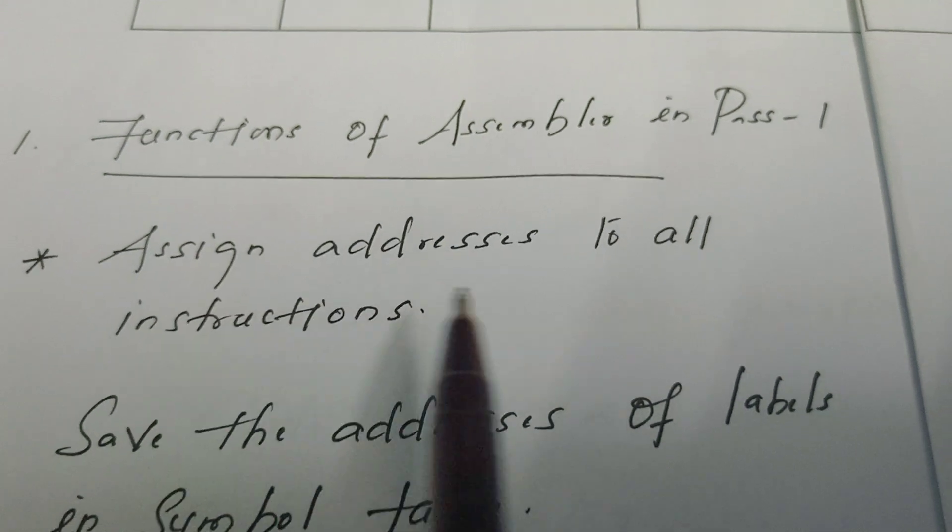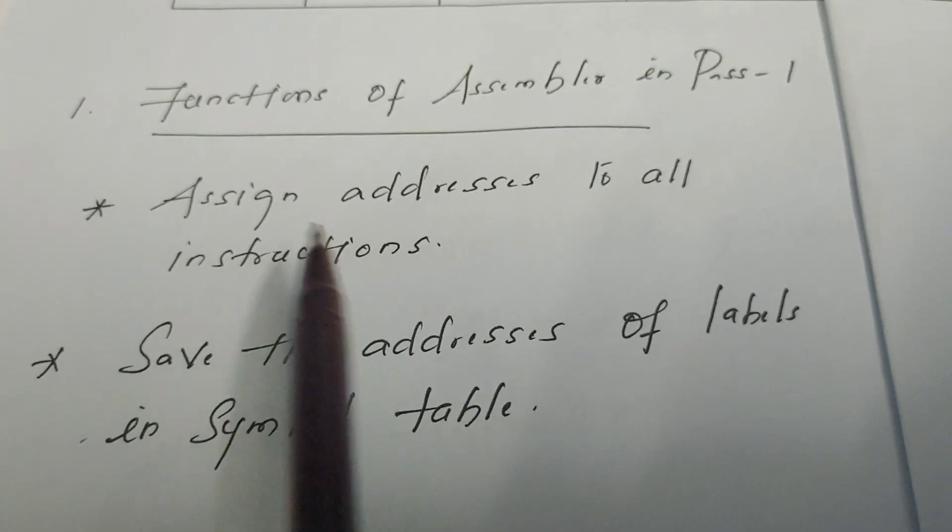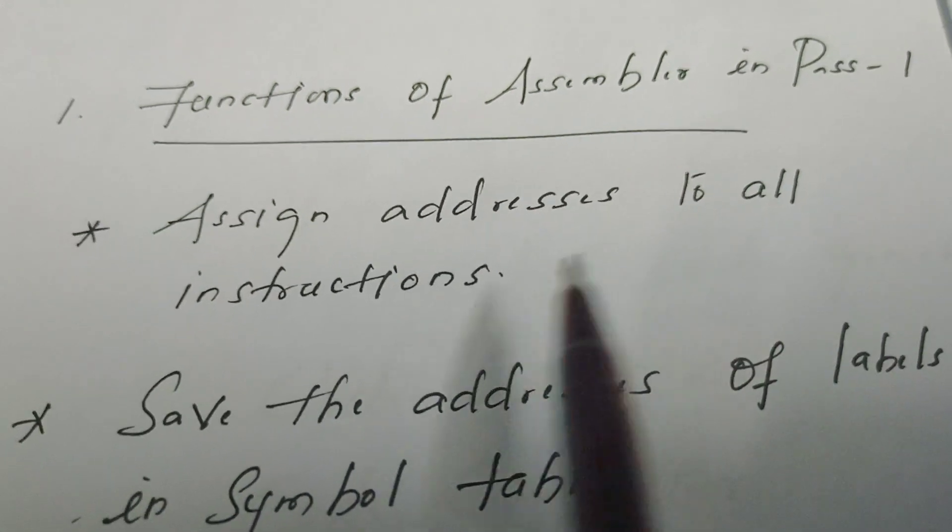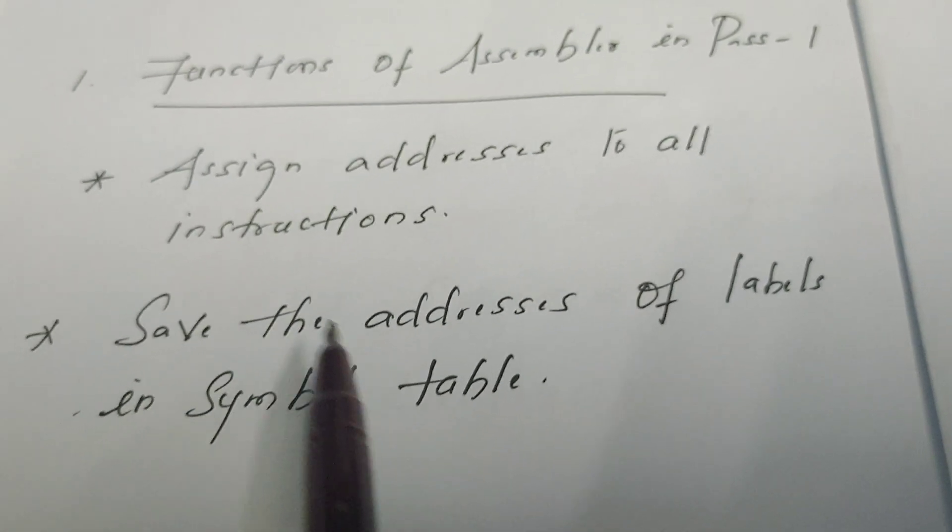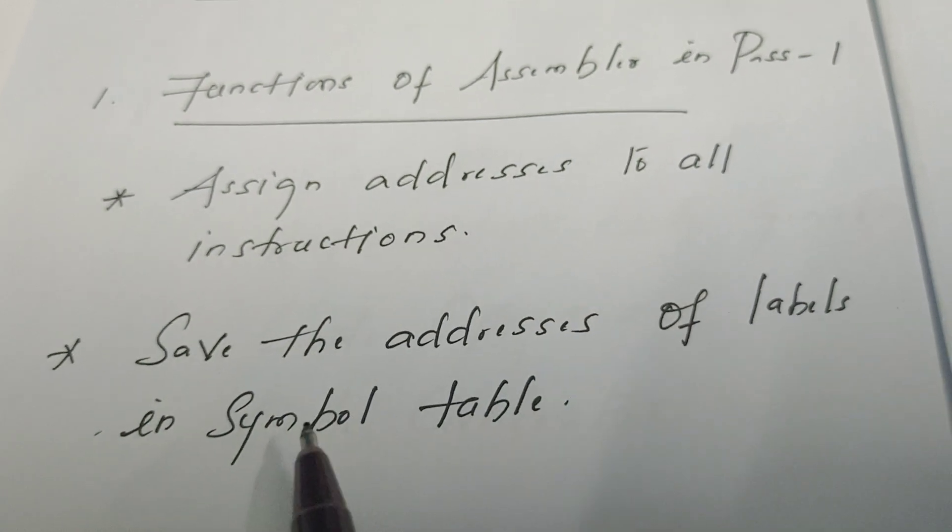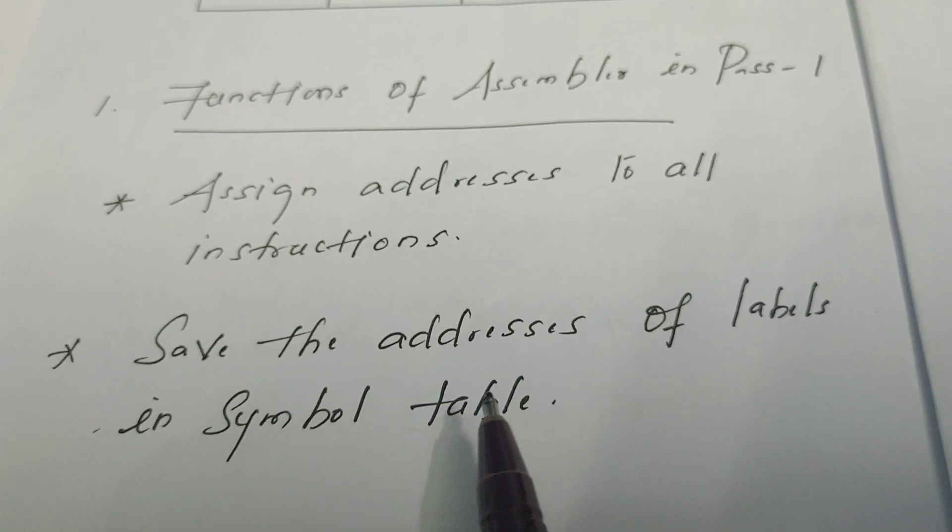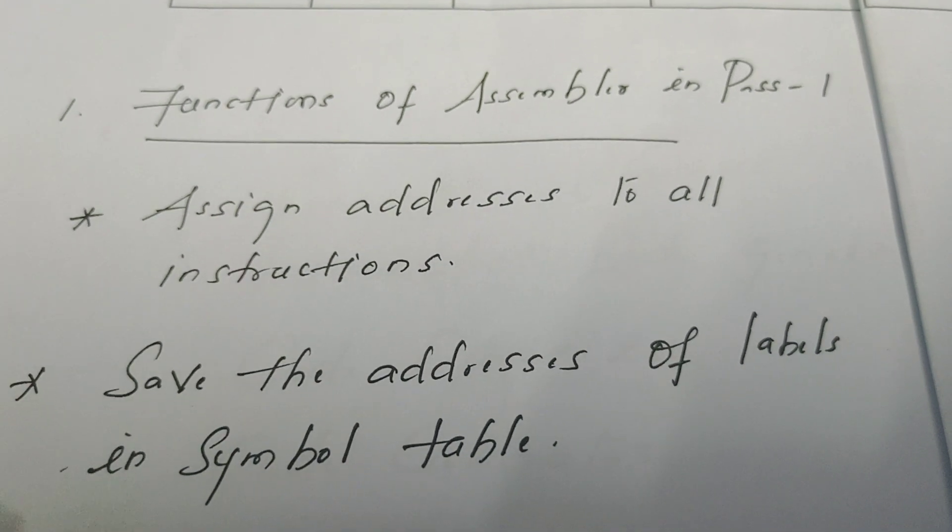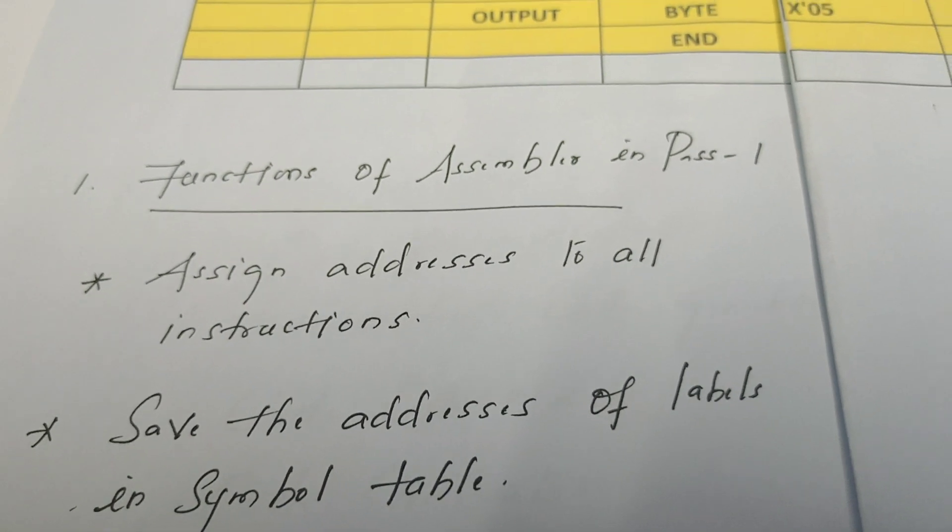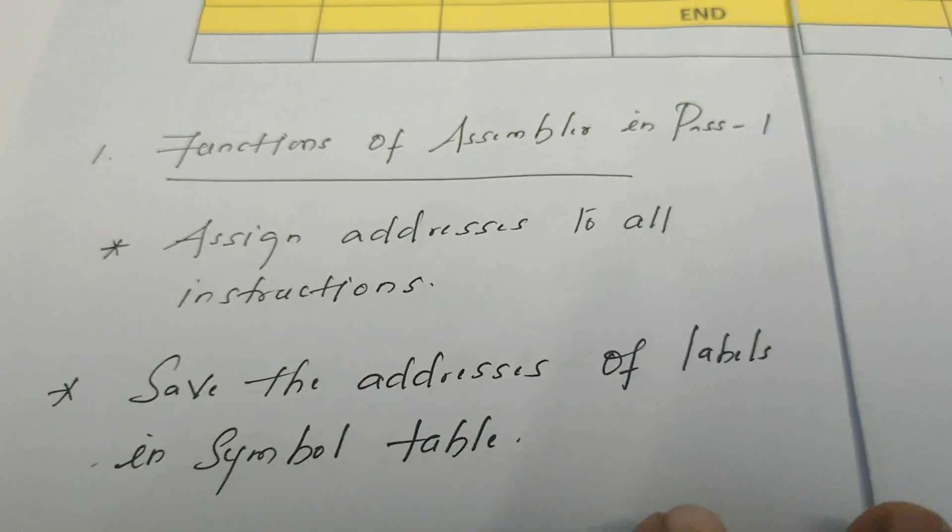The very first thing is it assigns addresses to all the instructions in the given program. Then the second function is it saves the addresses of all the labels into the symbol table. Of course it processes some of the assembler directives also. Let us try to understand the functions of the assembler in Pass 1 with an example.